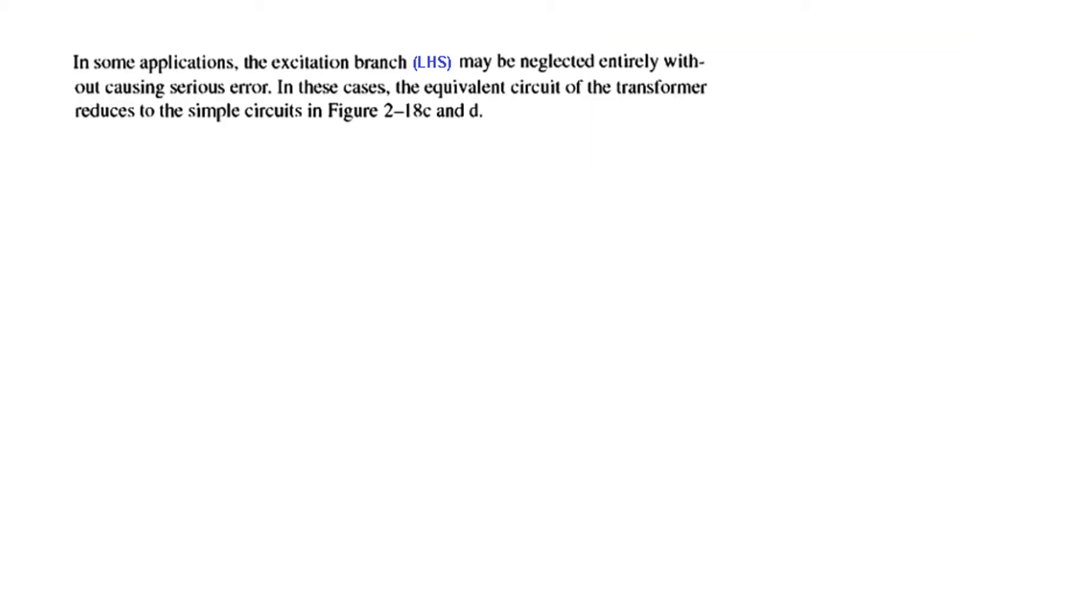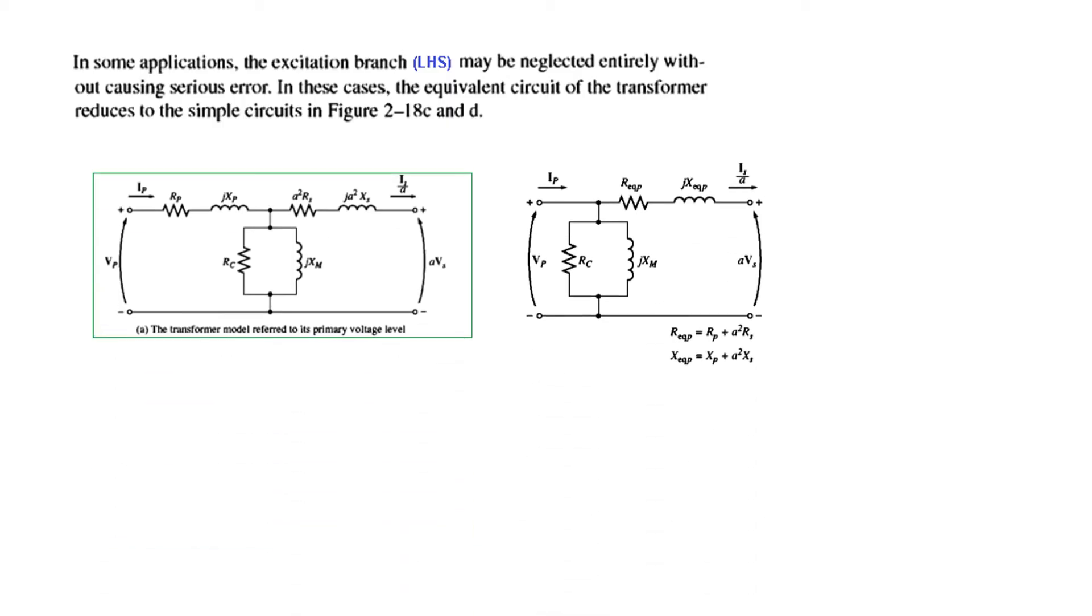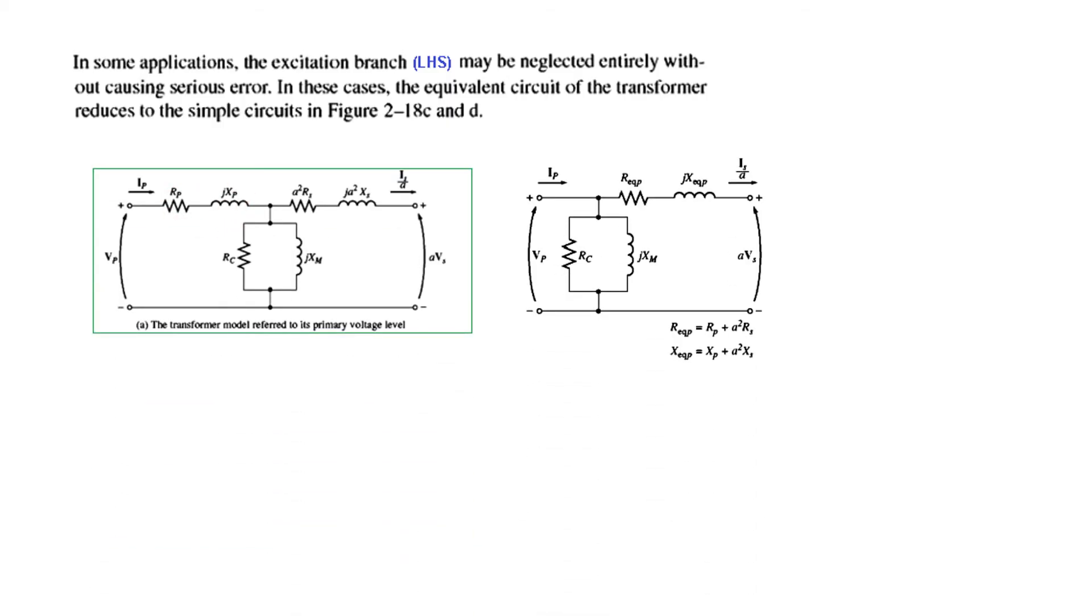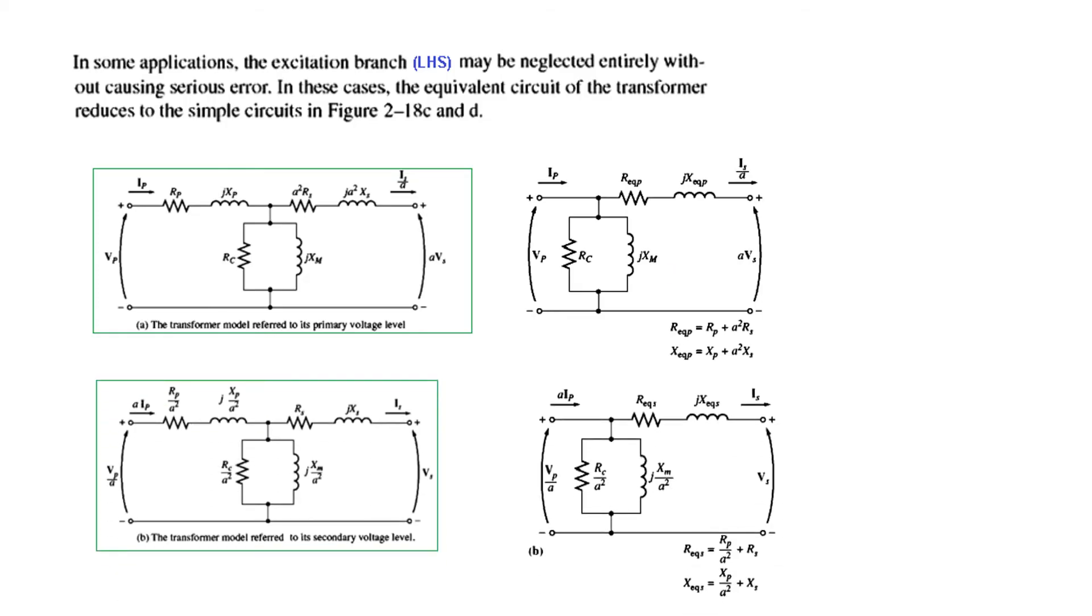Now, in some applications, the excitation branch, that is the left hand side of the circuit that we saw, may be neglected entirely. So this left hand side may be neglected entirely without causing serious error. Now, in these cases, the equivalent circuit of the transformer reduces to a simple circuit shown in figure. So now, if we neglect this, then you can see this is what is left. So this is what is left here. But this is our equivalent circuit, simplified equivalent circuit, referred to the primary side. And similarly, we can refer to the secondary side also could be reduced by neglecting this part. So this will be the one referred to the secondary side. Again, we'll solve a problem by using the primary side.